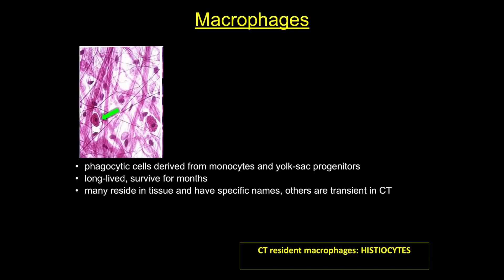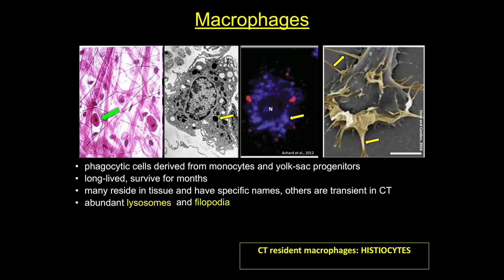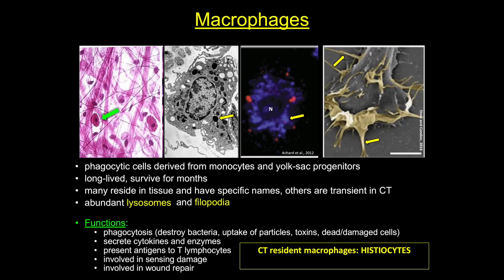Next we have the tissue macrophage, called histiocytes by pathologists. These cells derive from monocytes, have phagocytic activity, and are long-lived in tissue. There's another population of transient macrophages that can be recruited in response to infection and inflammation. These cells are easy to distinguish in tissue — they have abundant lysosomes that appear as clear vesicles in tissue sections. Here we see several of those clear vesicles in H&E stained sections, dark circles in the electron micrograph, and blue-staining structures in macrophages stained with a lysosomal marker. Macrophages are motile cells able to travel to sites of infection for cleanup, and they have abundant filipodia, allowing them to phagocytose bacteria and dead or damaged cells, sense damage, and secrete cytokines to recruit other immune cells.